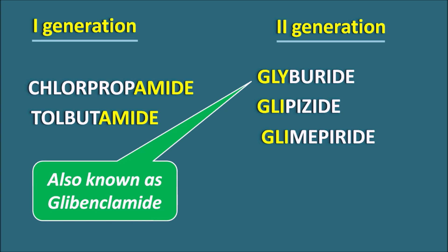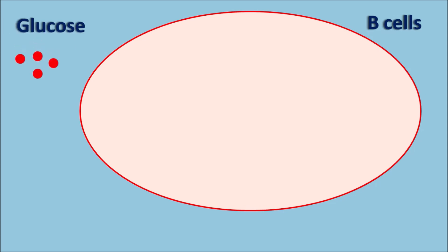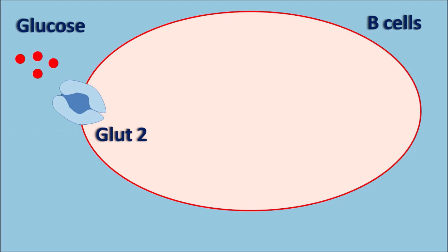The main target of sulfonylureas is the beta cells of the pancreas, from which insulin is released to control plasma glucose levels. In order to release insulin from beta cells, one important stimulant required is glucose. When plasma glucose levels are excessively increased, they stimulate the beta cells to release insulin. Glucose is taken into beta cells through the GLUT2 transporter, while another transporter, GLUT4, is responsible for glucose uptake into other cells.